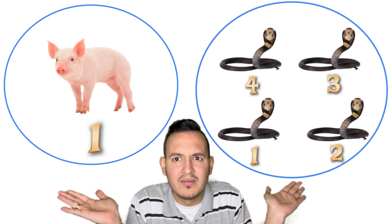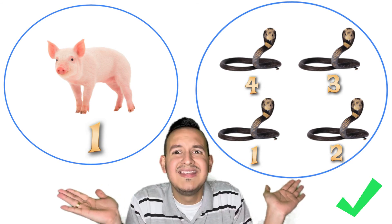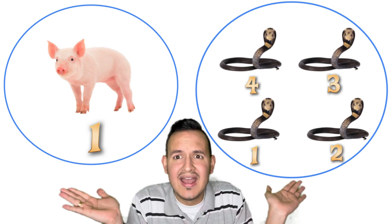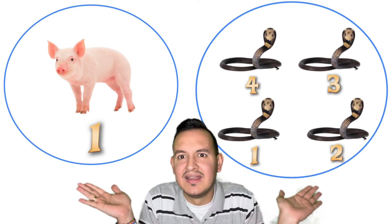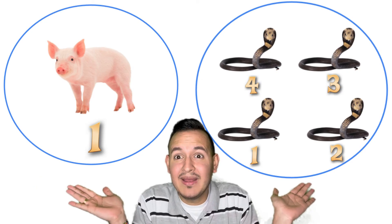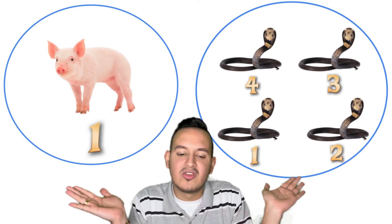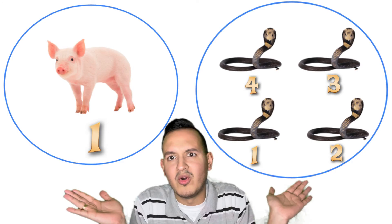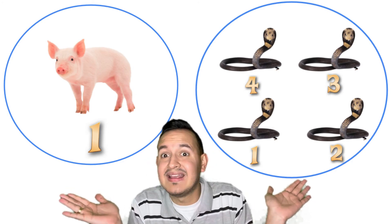Which group has more? Yes, more snakes. And which group has less? Yes, less pig. Very good. Yes, because four is more than one and one is less than four. Very good.